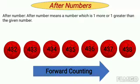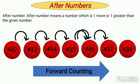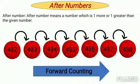Now, let us understand after numbers. After number means a number which is 1 more or 1 greater than the given number. Here, you can see few numbers are written on the ball and you can see the arrow which shows forward counting. So, what comes after 432? This is 433, 434, 435, 436, 437 and 438.